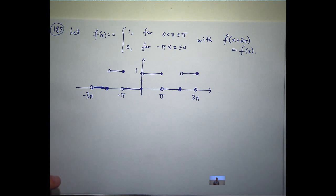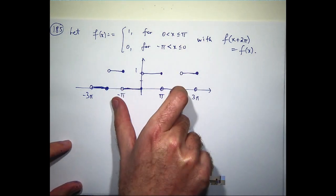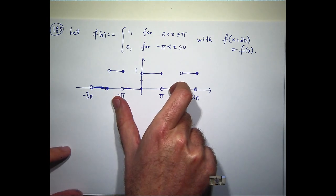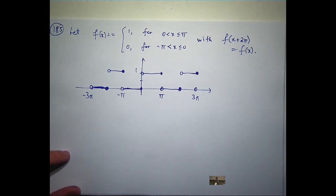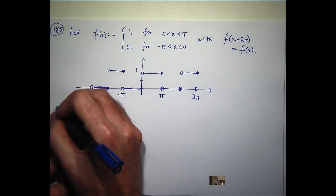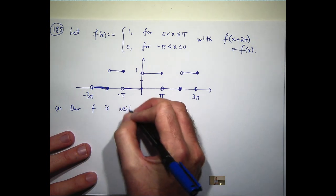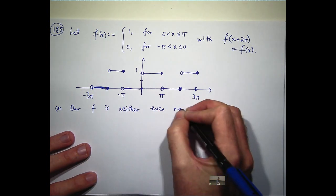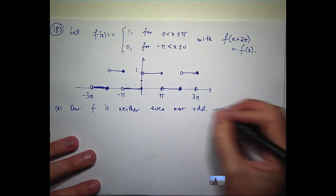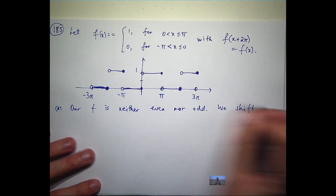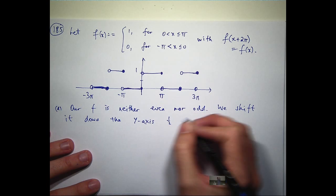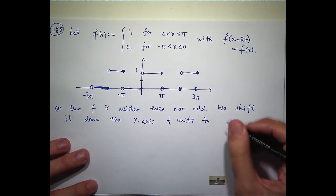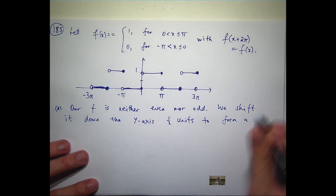Then it will be an odd function. So what I'm going to do, I'm going to be a bit sneaky, and this is another good time-saving technique. I'm going to move the whole curve down half a unit. I'm going to calculate the Fourier coefficients for that, and the Fourier series. And then I'm just going to add one half to the series that I calculate, because I'll shift the series back up then.